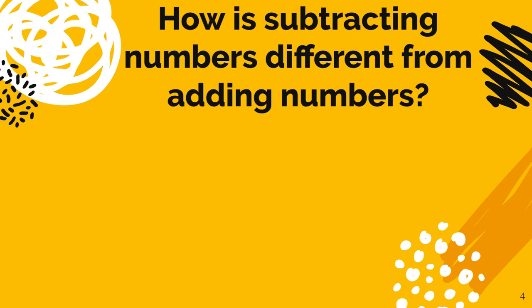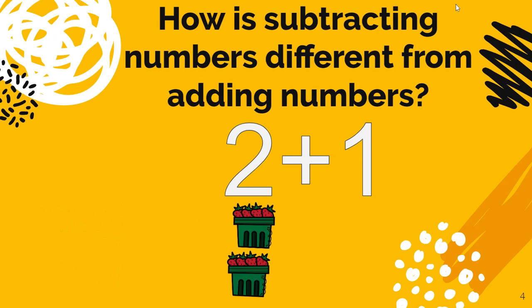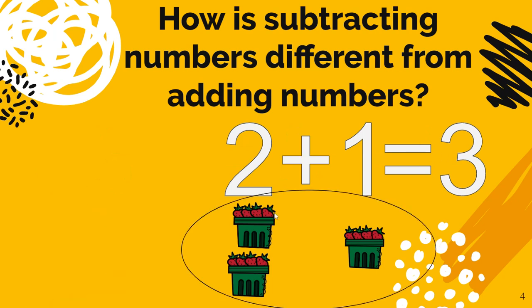So we're going to look at two problems that are exactly the same, except one is addition and one is subtraction. So the first one is 2 plus 1. So I have two buckets of strawberries, and then I get one more because I'm adding. So that means I'm getting more. So 2 plus 1 equals 3, because I keep the two that I started with and I get one more.